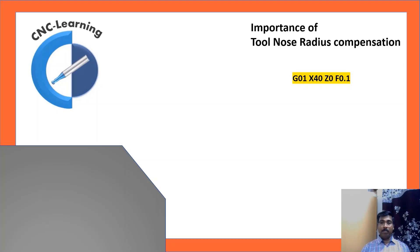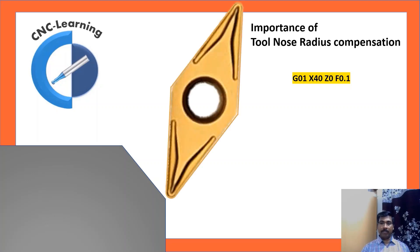Let us see the importance of tool nose radius compensation. The tool is positioned at X40Z0. You can see the X offset line and Z offset line, the point where X offset is taken and the point where Z offset is taken.